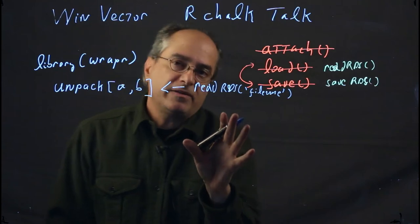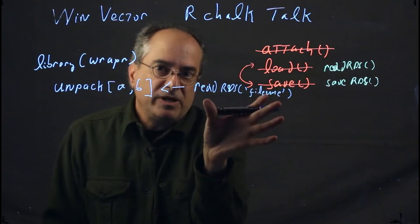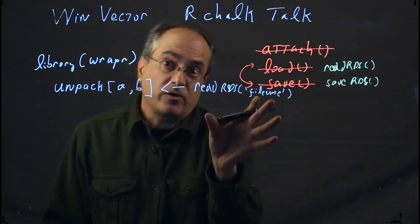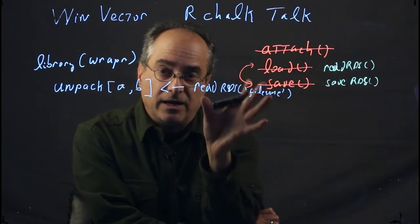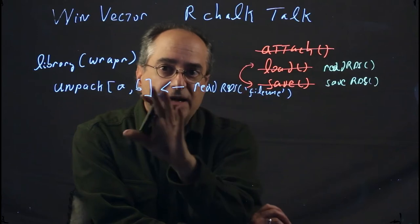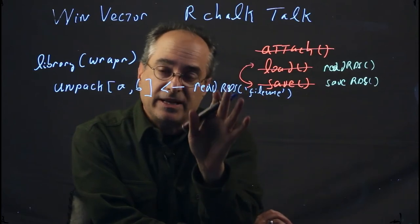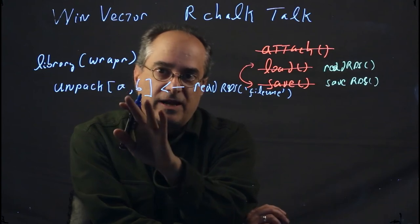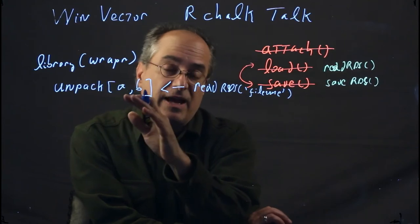This documents that we believe what's coming in has names at least a and b. It may have more, but we're ignoring them. A named list is a very good thing. We're documenting the expectation that this is a named list with values a and b, and we're going to write those values into our workspace under the names a and b.